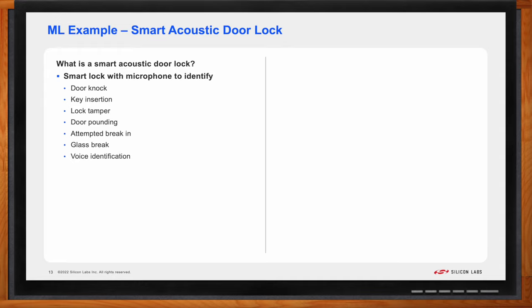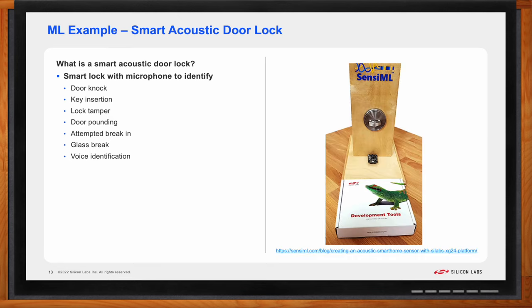A smart acoustic door lock would be one with a mic and could be listening for different types of sounds. And if desired, those sounds could be notification events that are sent to the owner. For instance, it could listen for a knock on the door or a successful insertion of a key, or it could be detecting events of concern like the tampering of the lock or pounding on the door or glass breaking or some attempt to break in. And finally, it could go as far as voice identification to provide a second level of security. In fact, one of our third-party Explorer tool partners, Sensimal, has created a tutorial that goes through the step-by-step process of gathering data, training a model, testing, converting, and integrating that model into a standard wireless application. This is just one of many ways that machine learning can provide added value.